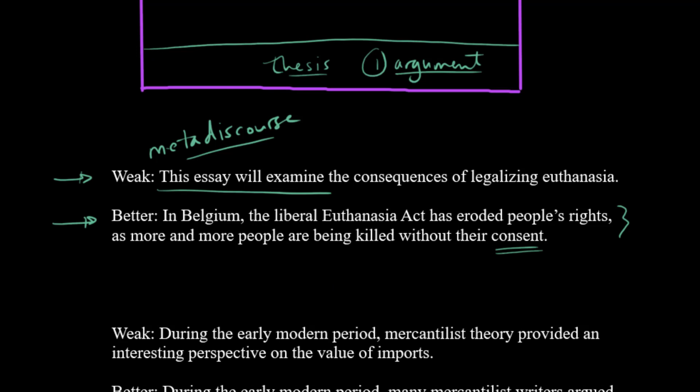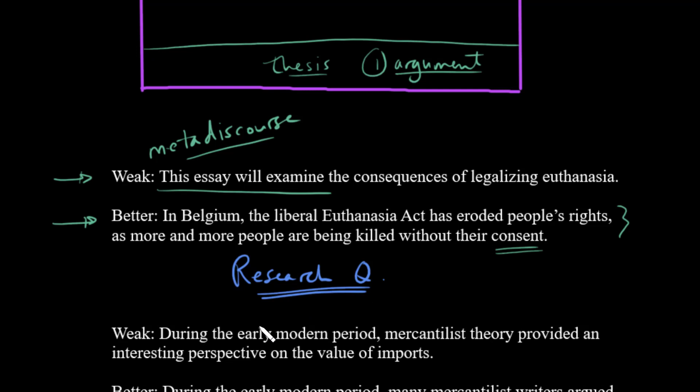Behind every argument is what we call a research question. There's always a research question in the background — in this case the question is: what happened in Belgium? What was the effect of the Euthanasia Act? And the answer here is that it has been a negative effect. It's often helpful if you can spell out for yourself what your research question is. It could be a question the instructor has given you, or one you're posing yourself. You could sometimes use the research question as the thesis, but that's experimental and doesn't always work. You can at least put the research question somewhere in your introduction and then answer it in your thesis.